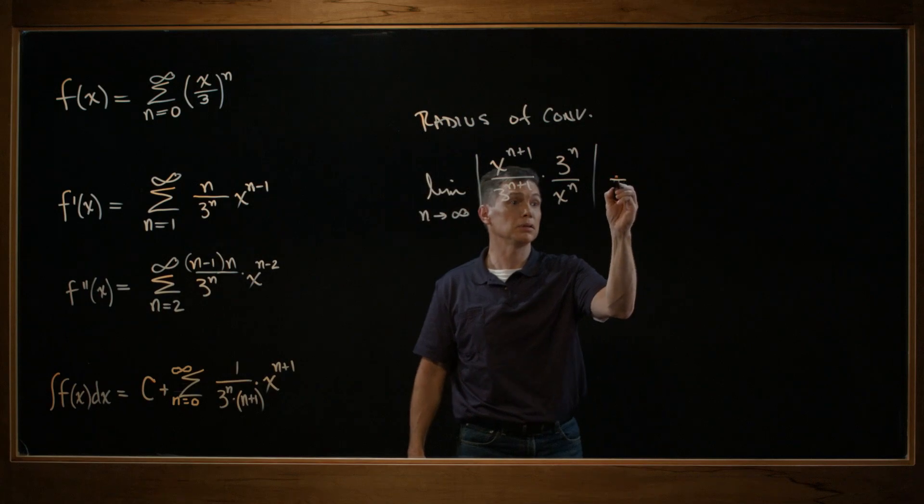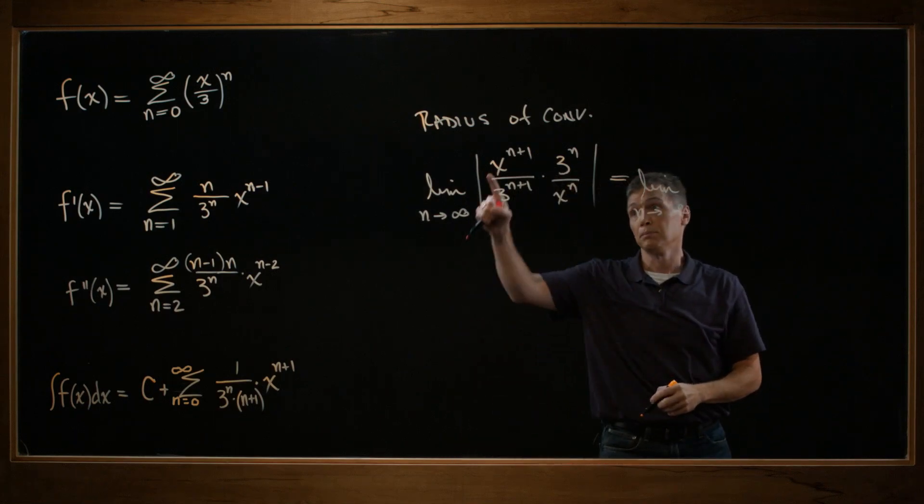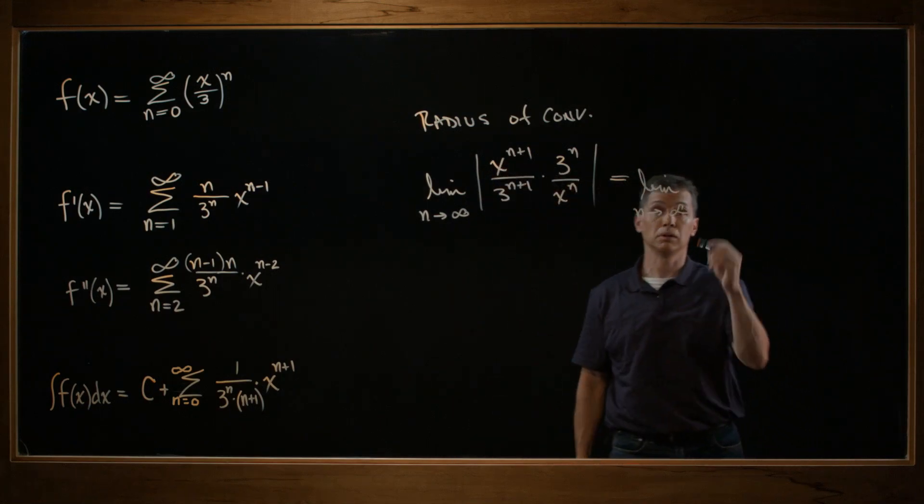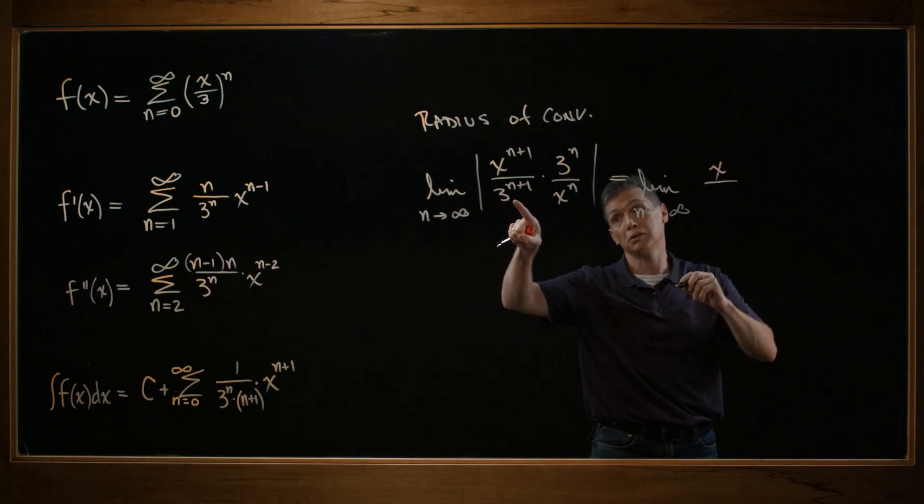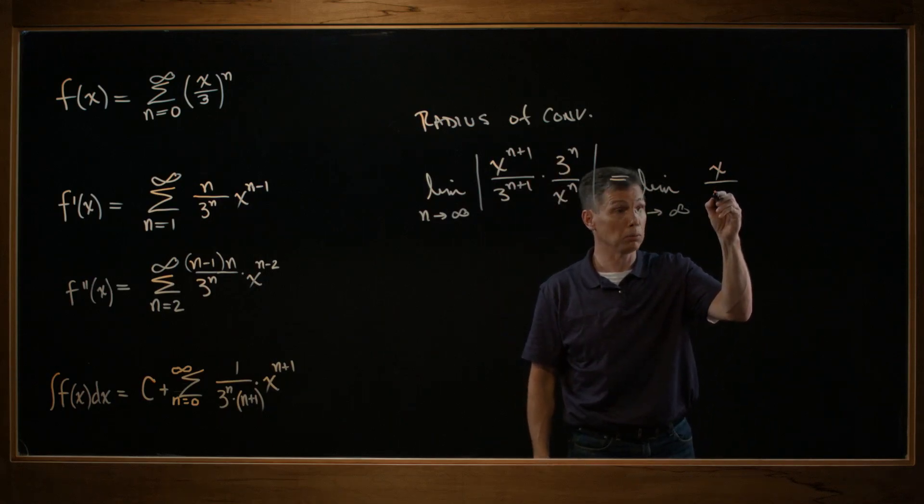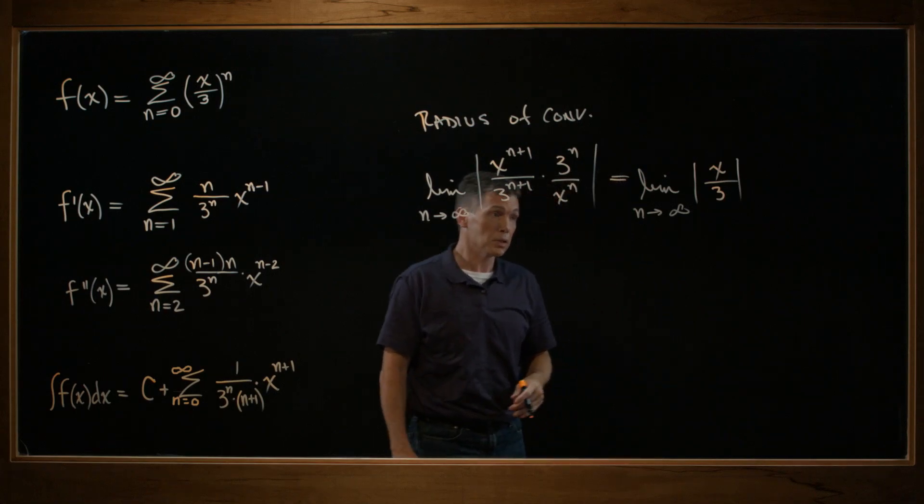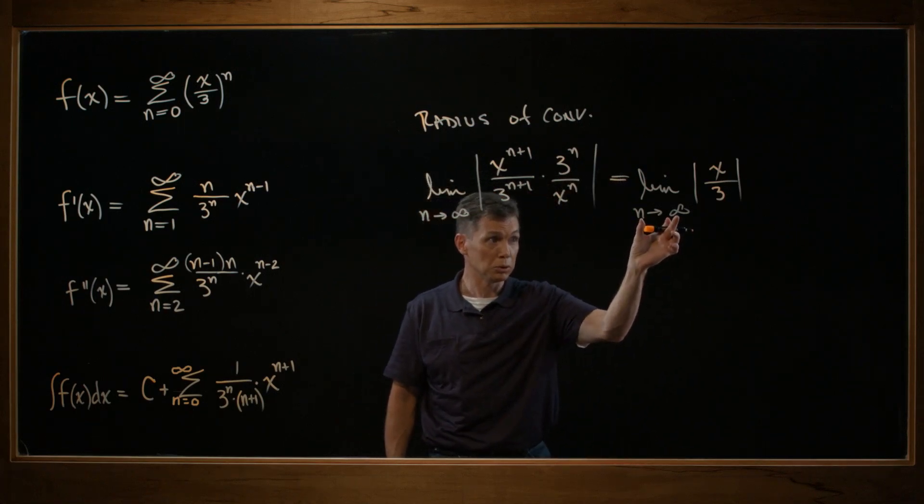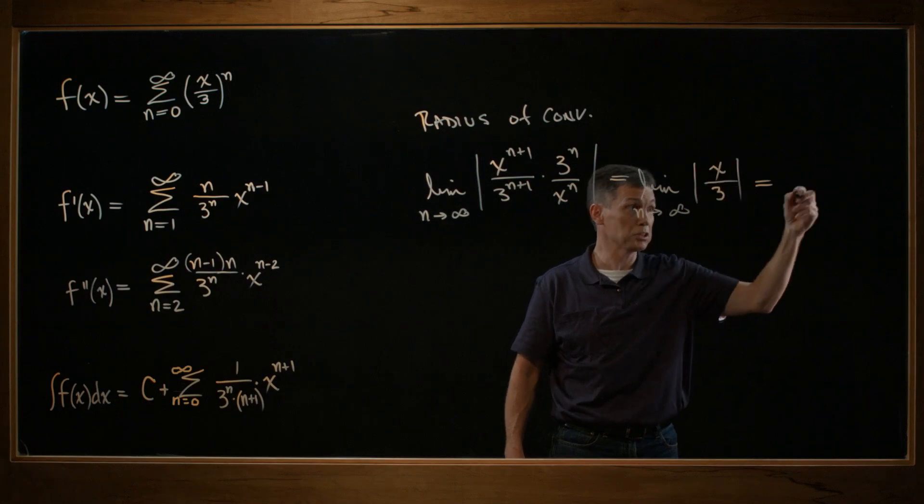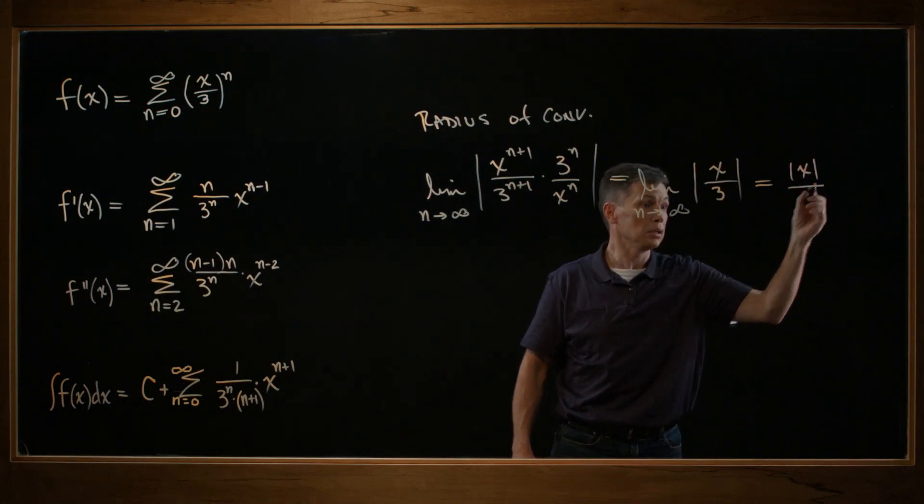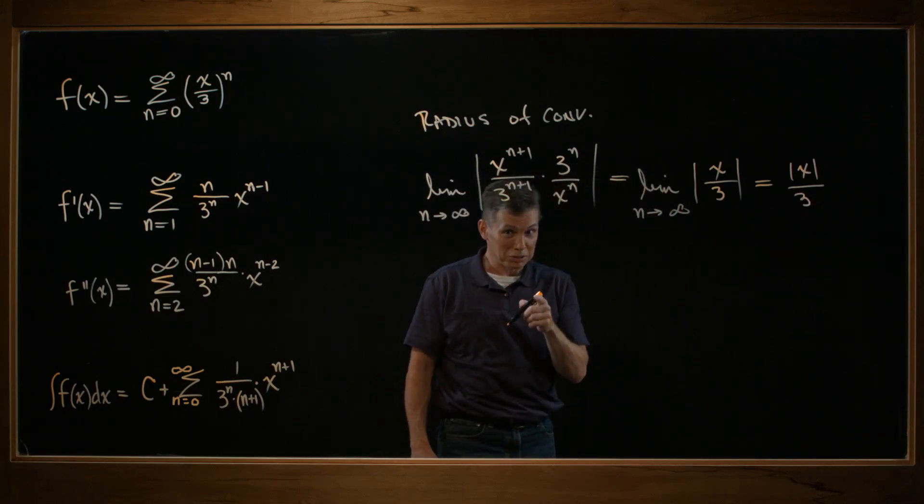Now we'll simplify a little bit. This equals limit still. N goes to infinity still. N plus 1 factors of x on top. N factors of x on the bottom, so you'll be left with one of them up top. N plus 1 factors of 3. N factors of 3, so you'll be left with one of them on the bottom. I'm looking for that as an absolute value. This is one of those cases where we're doing a limit as n goes to infinity, but there are no n's. So this answer is actually just the expression, absolute value of x over 3. Let's actually do the absolute value of 3 here. That's just 3. So that's my answer for the limit.